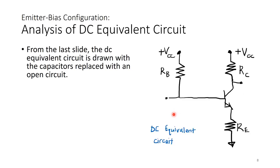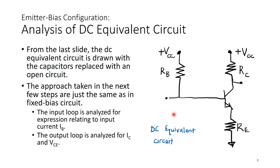This is how the DC equivalent circuit looks. I have included my own handwriting to demonstrate that if you do this on paper for intuition before carrying on with the full circuit analysis, it is quite doable and not difficult. The approach in the next few steps after drawing the DC equivalent circuit is the same as for the fixed bias: first the input loop, then the output loop. The input loop gives an expression for IB, and the output loop gives expressions for IC and VCE.